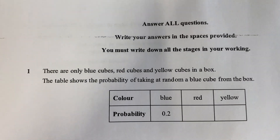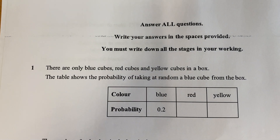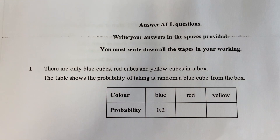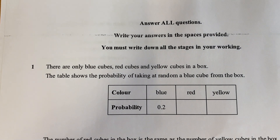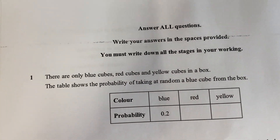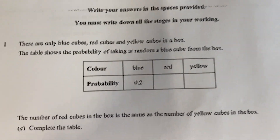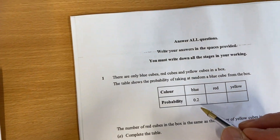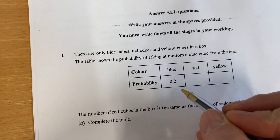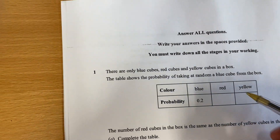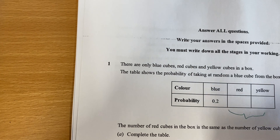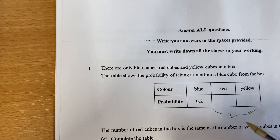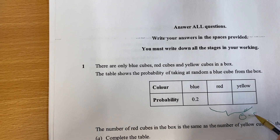It says here that there are only blue cubes, red cubes and yellow cubes in a box. The table shows the probability of taking, at random, a blue cube from the box. Immediately what I'm thinking is: I've got 0.2, and knowing that all the probabilities add up to 1, the remaining lot must be 0.8.